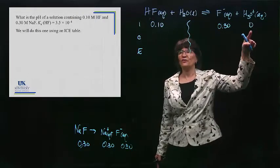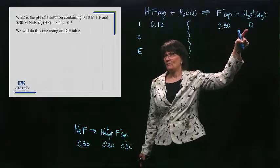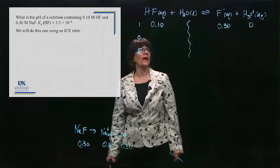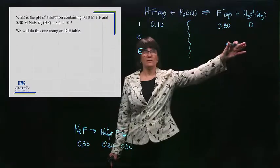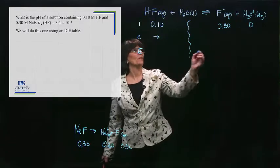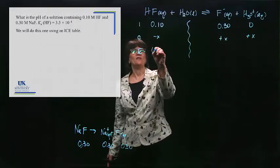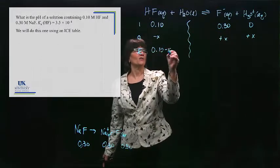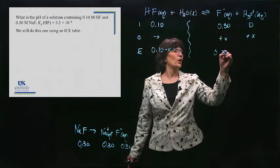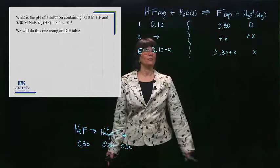And I'll still put a 0, because this is essentially a 0. We know it's actually 1 times 10 to the minus 7, but 0 works for this. OK. Now, it's going to proceed to the right to try to bring this up. So we put in a minus X, a plus X, and a plus X. We have 0.10 minus X. We have 0.30 plus X, and we have X. So there's our ICE table.